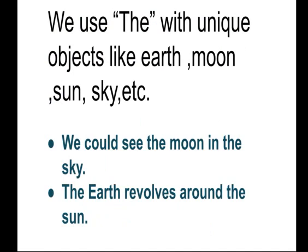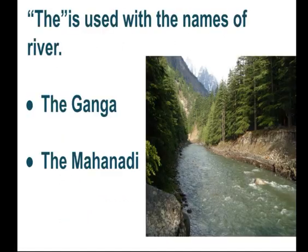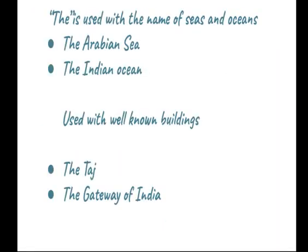We use the with unique objects like earth, moon, sun, sky. For example: we could see the moon in the sky; the earth revolves around the sun. The is used with the names of rivers — like the Ganga, the Mahanadi, the Brahmaputra. The is also used with the names of seas and oceans — for example, the Arabian Sea, the Indian Ocean.